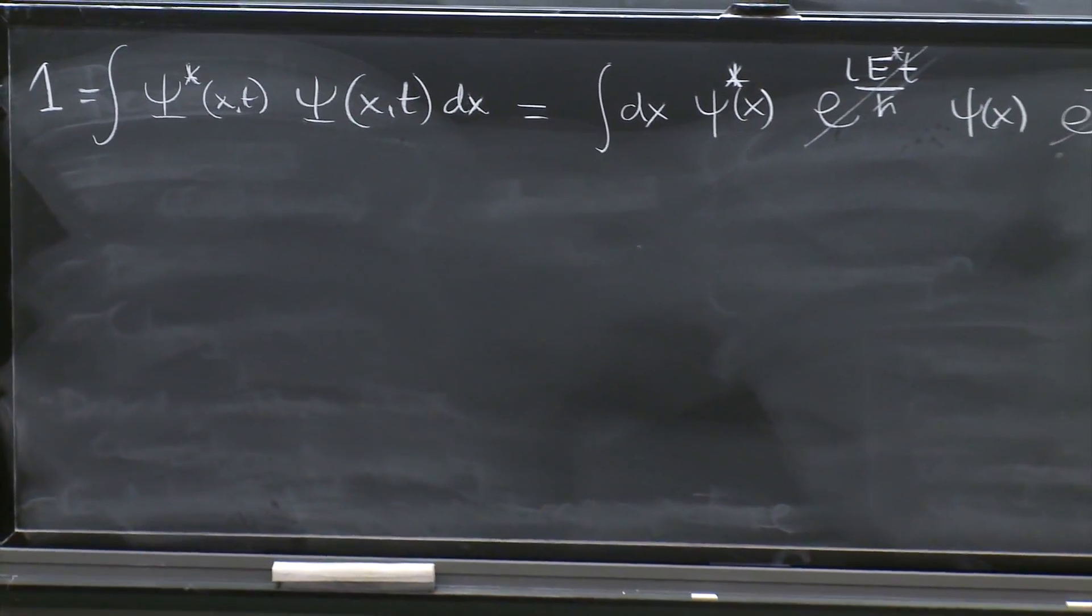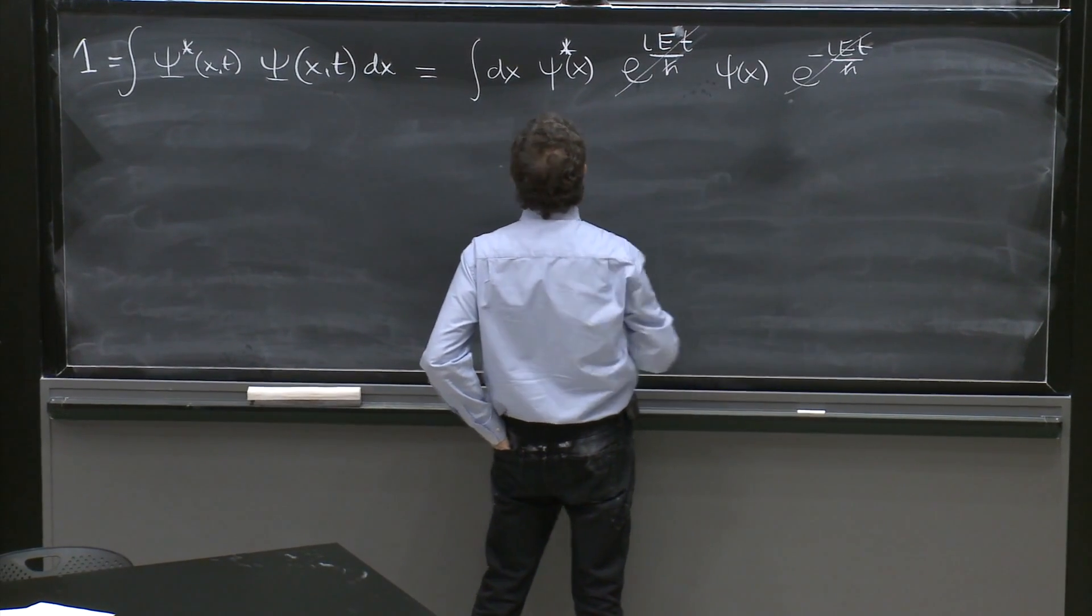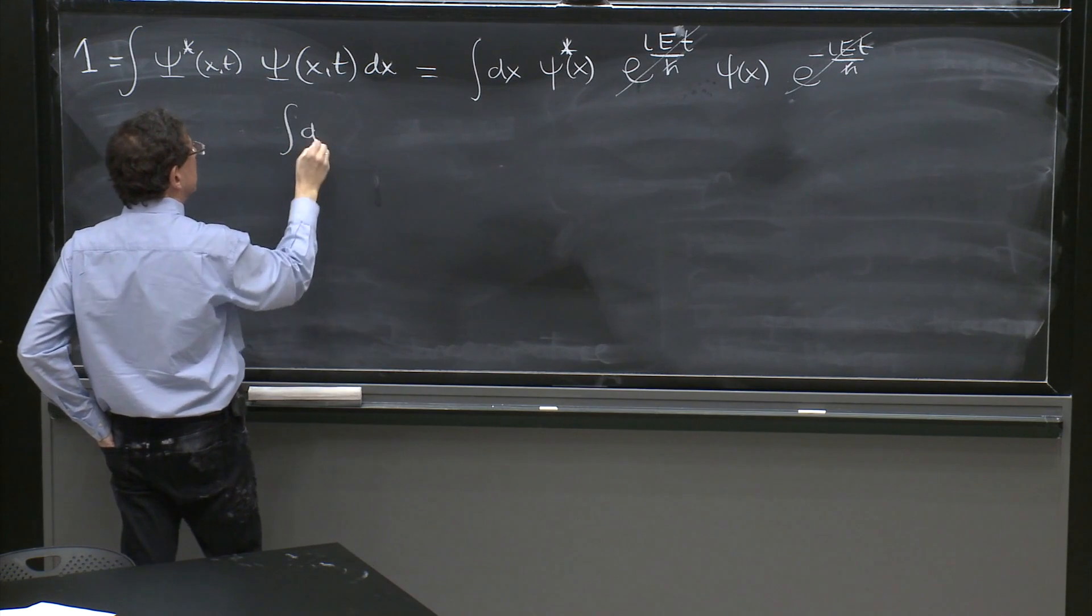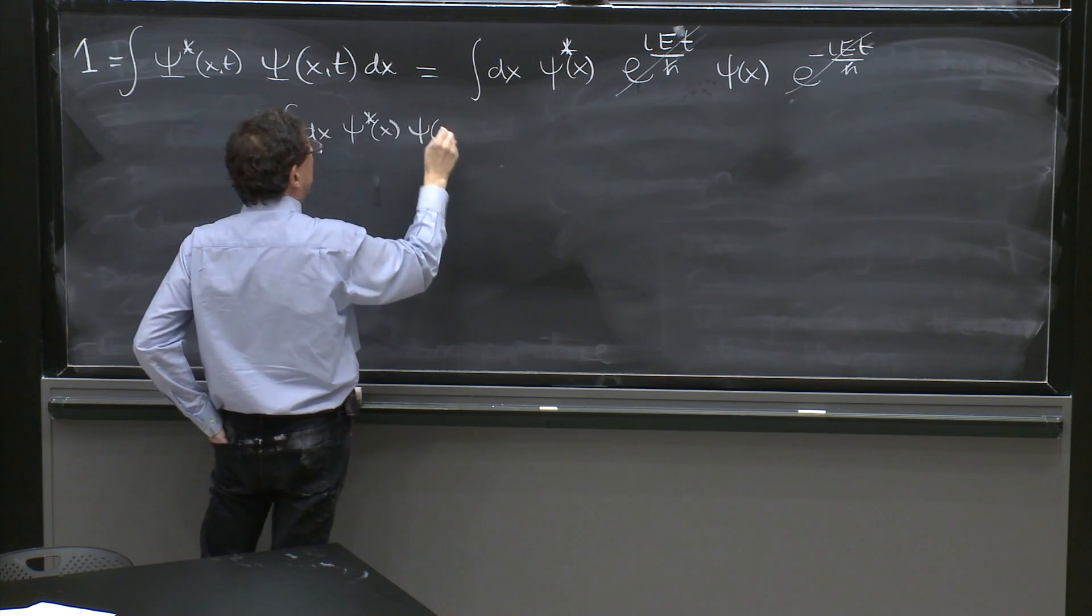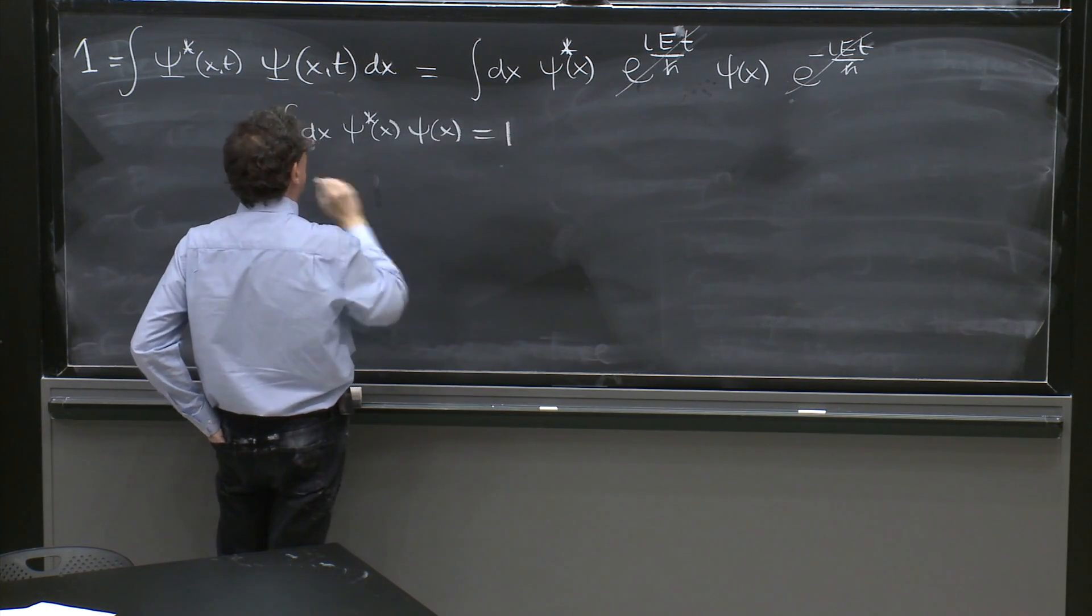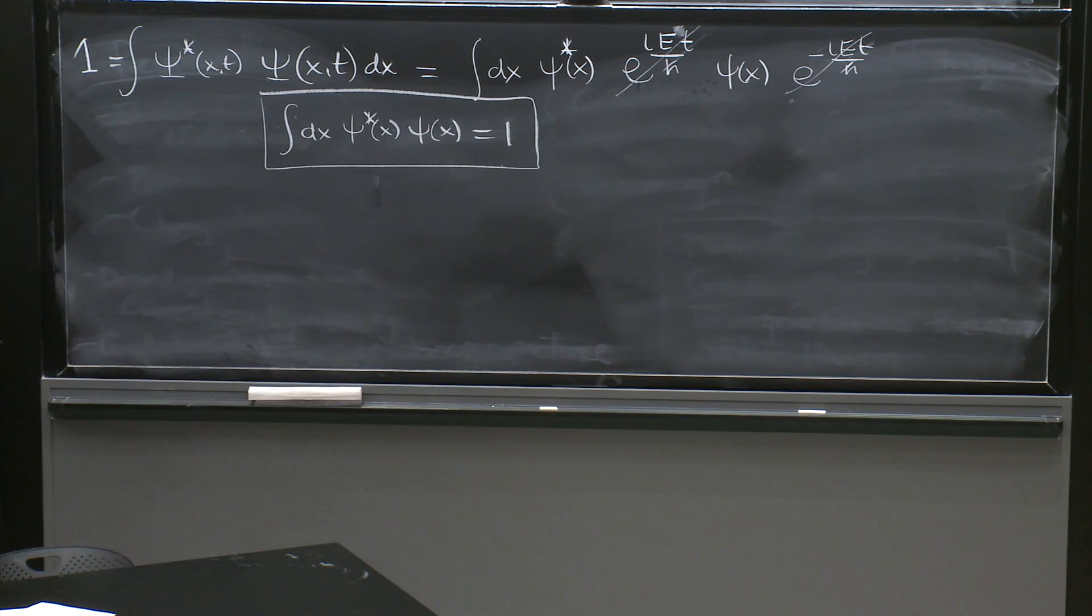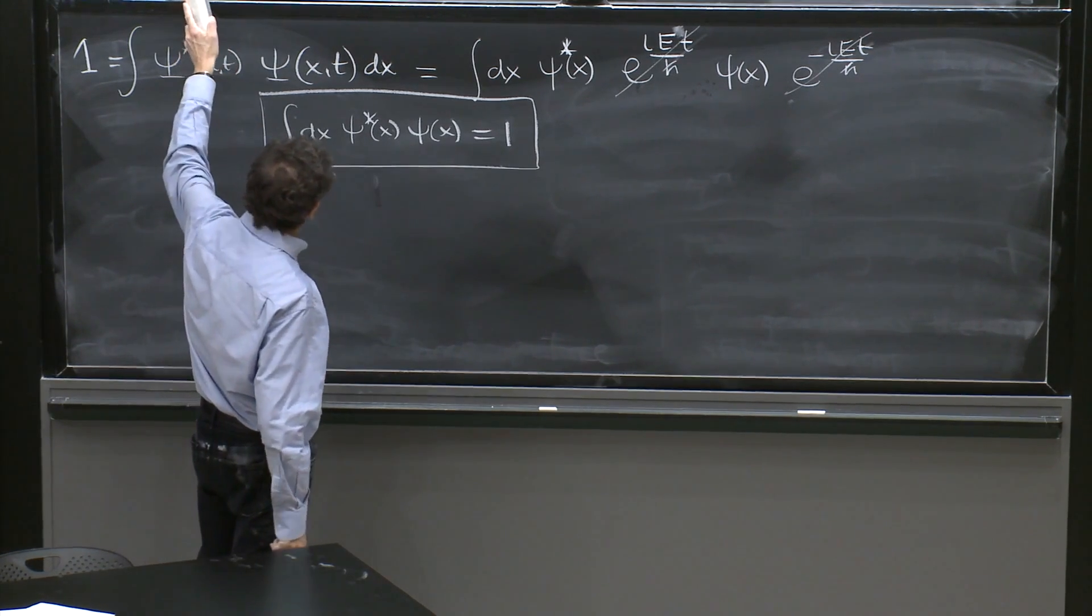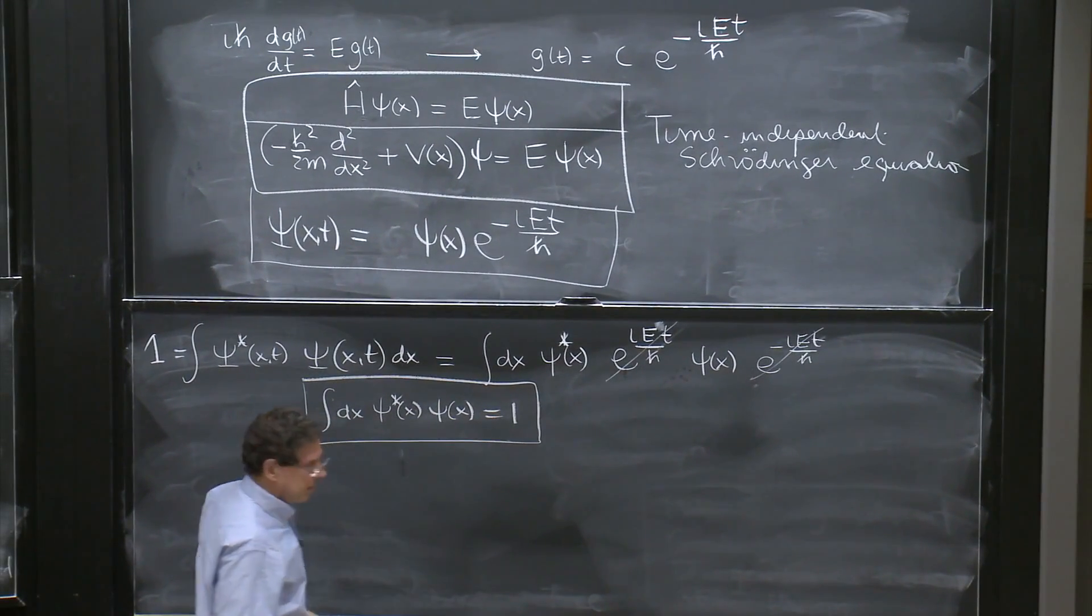So E must be real because otherwise, you don't cancel this time dependence. Which, happily, when it cancels, it just tells you that the integral dx of psi star of x, psi of x must be 1, which is a very nice thing. So in a stationary state, the normalization condition for a full time-dependent stationary state is that the spatial part is normalized.